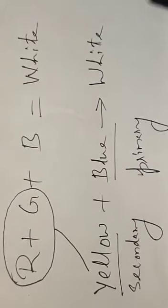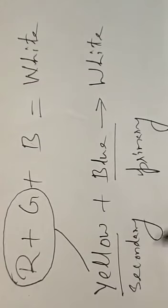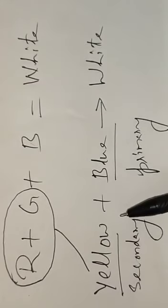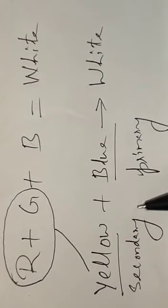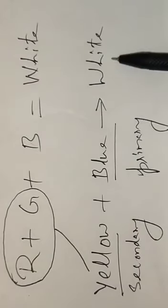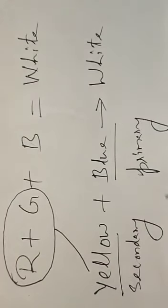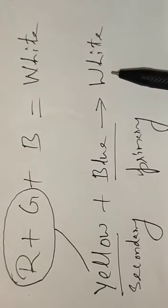So a pair of colors — here yellow and blue — which on mixing produces white light, is said to be complementary colors. Yellow and blue are complementary colors.